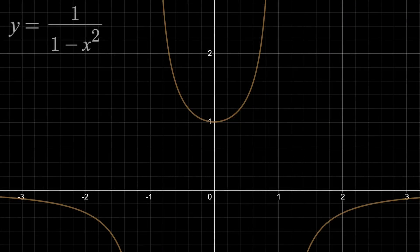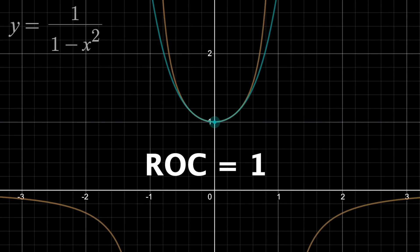1 over 1 minus x squared also has a radius of convergence of 1, when centered at 0, but when centered around 0.3, the radius of convergence is 0.7.